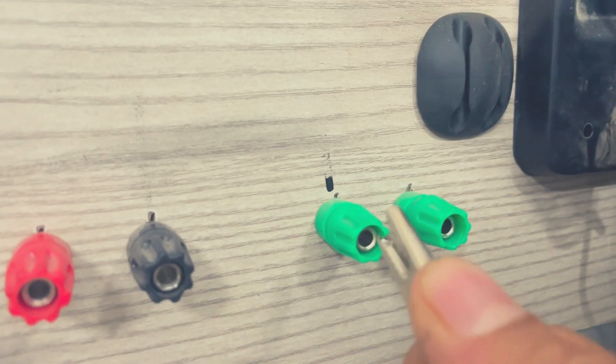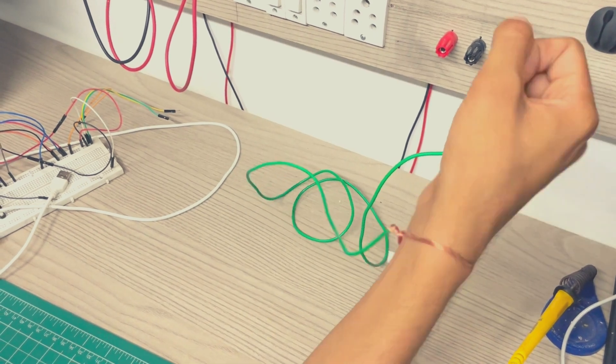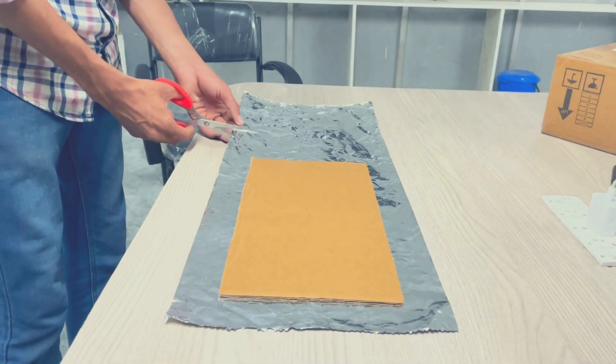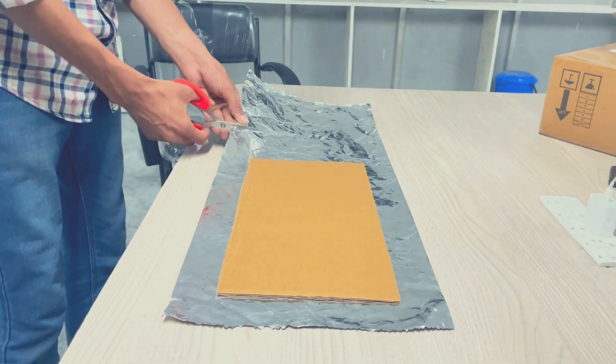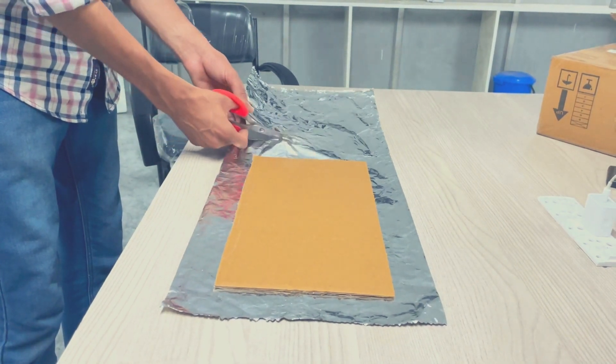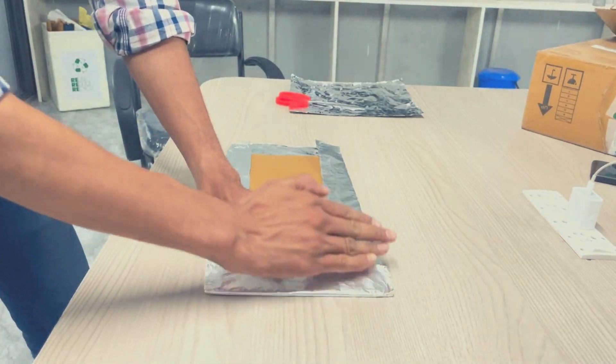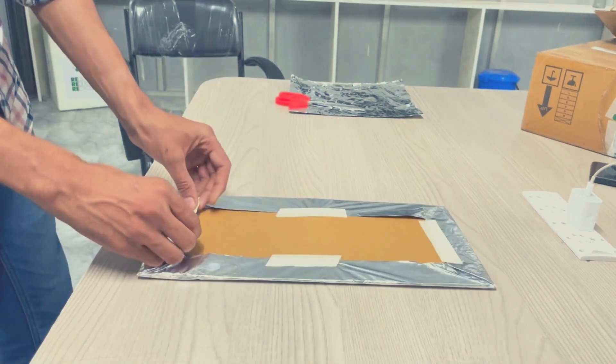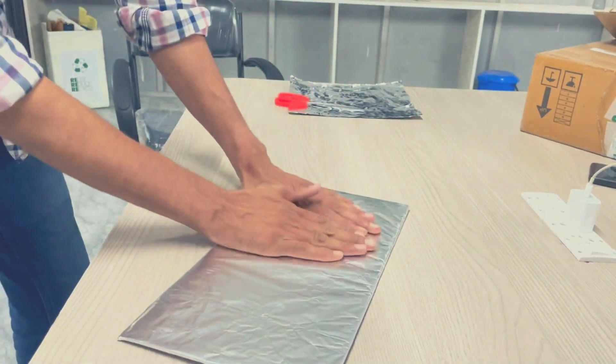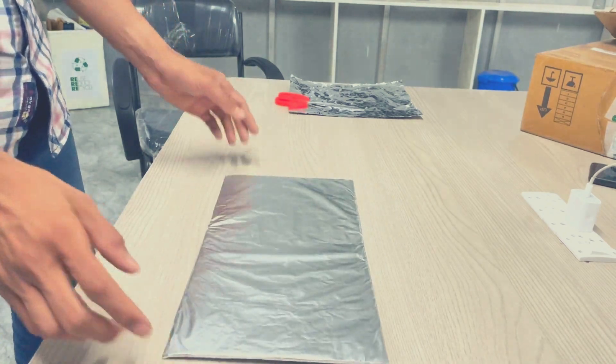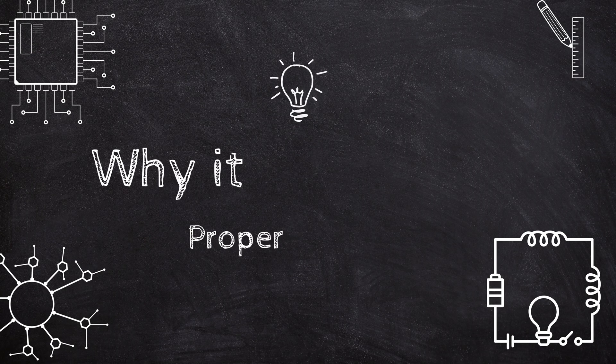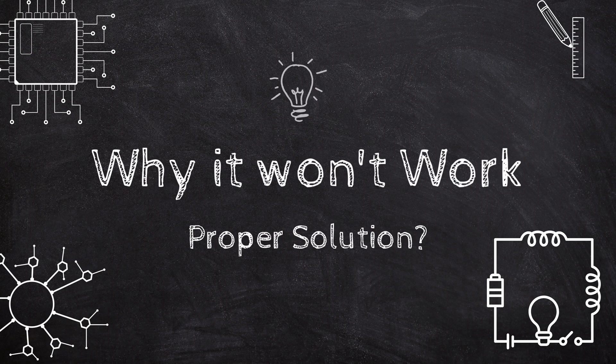Thus any charge generated will continuously flow to the earthen. And to keep the circuit and components discharged, we can simply make our base of metal plate or aluminum paper foil like this. But believe me, it's going to make the situation even more worse. Then why it won't work and what is the proper solution?